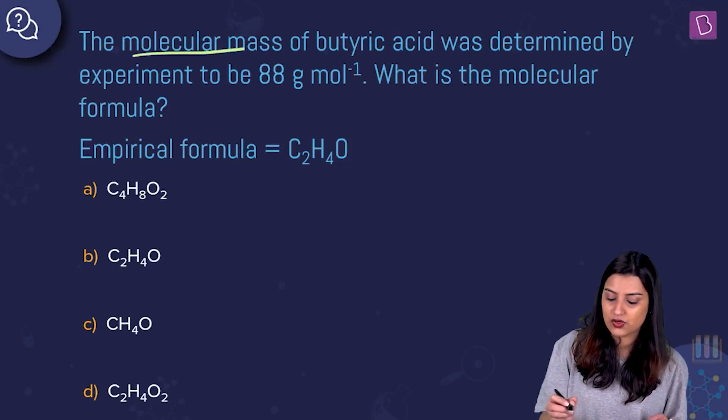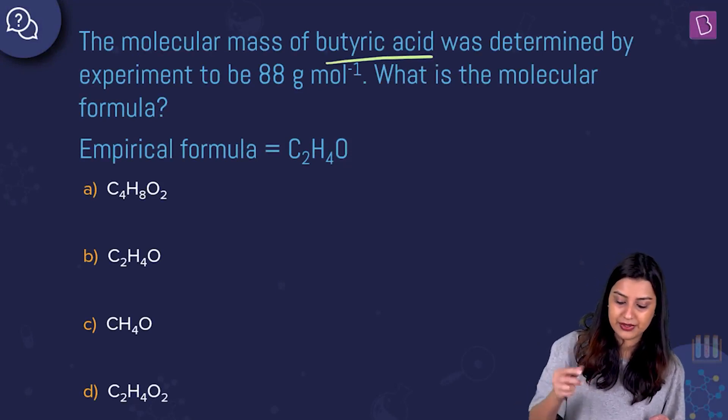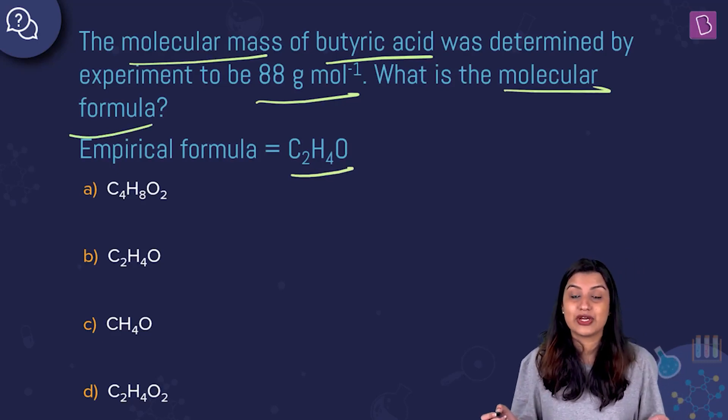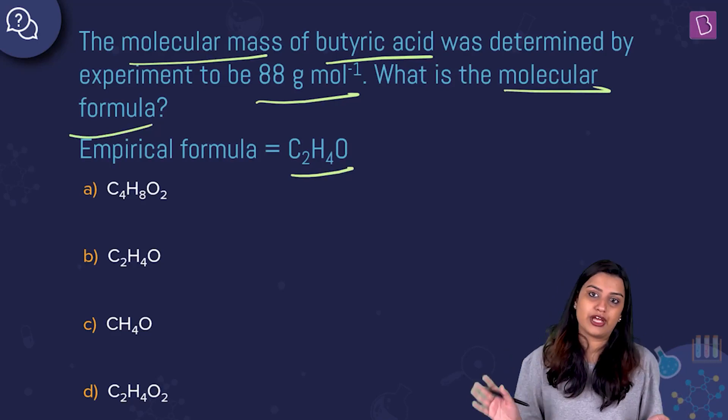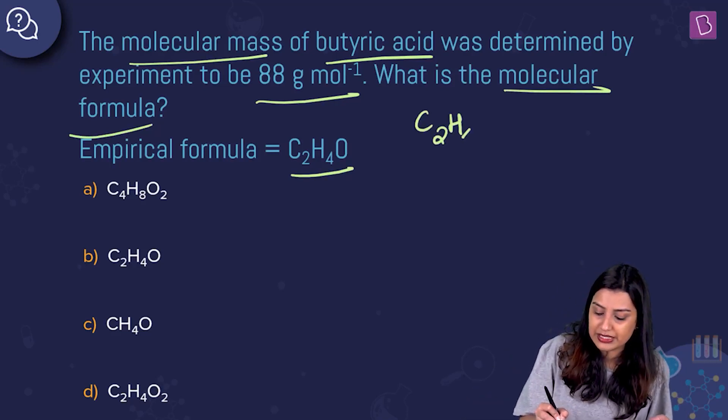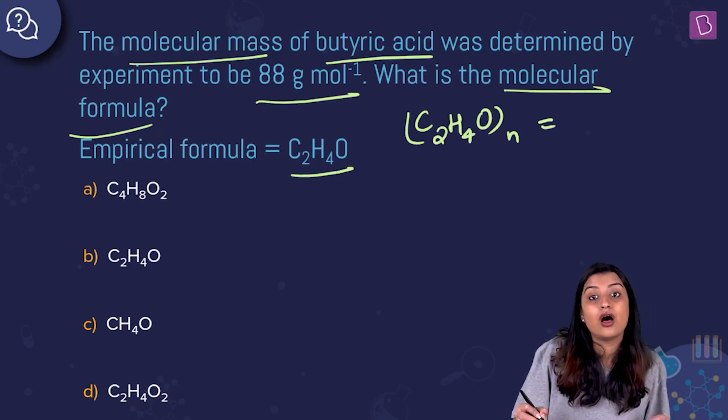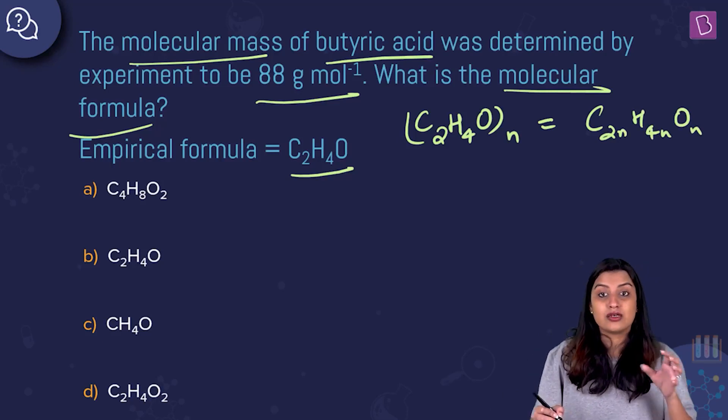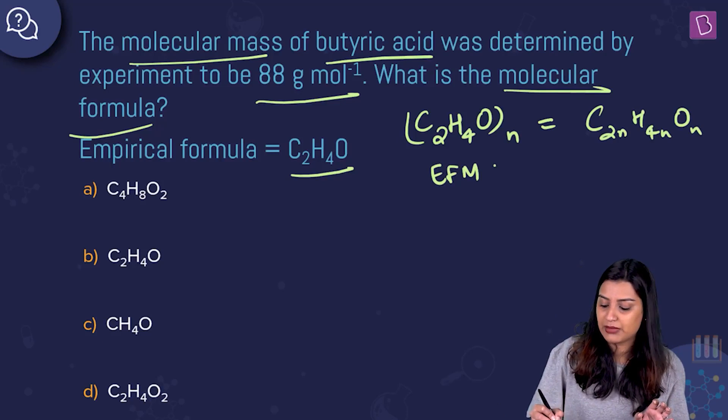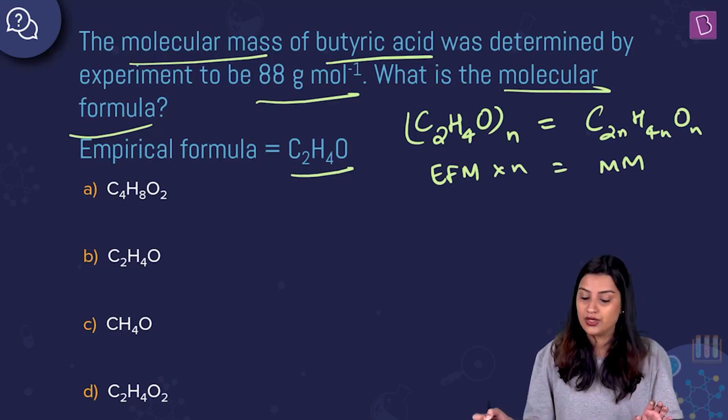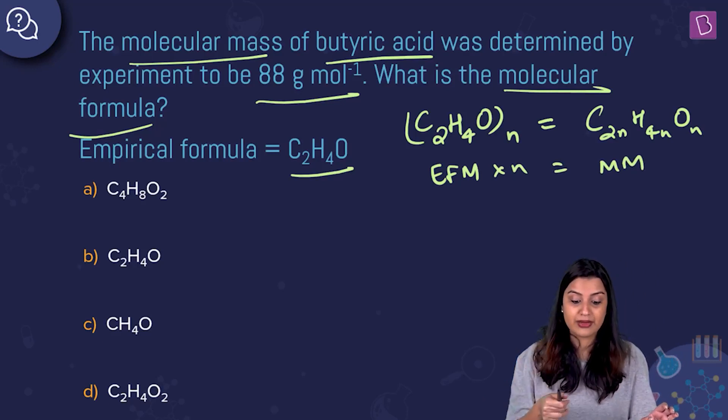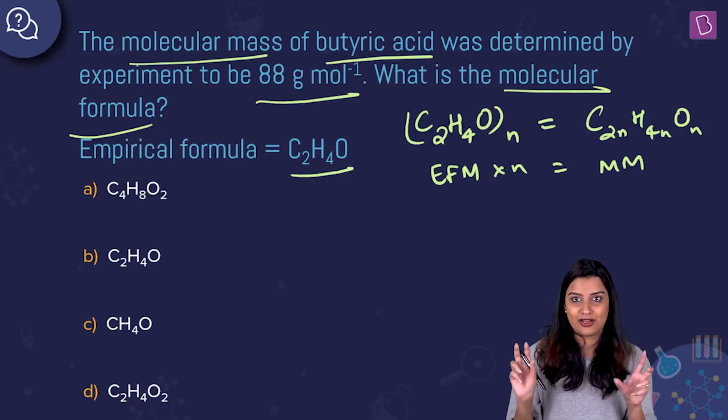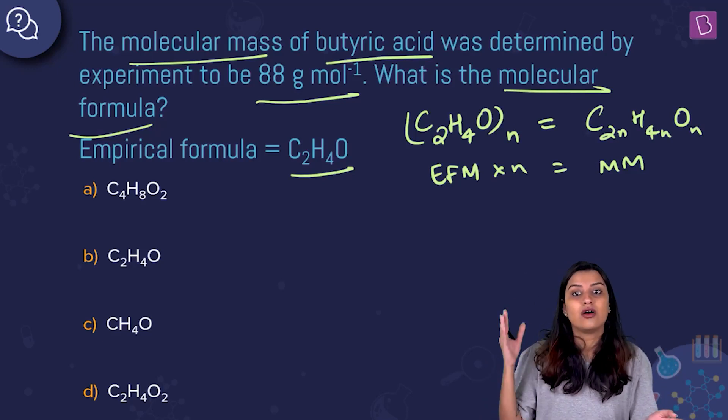The molecular mass of butyric acid was determined by experiment to be 88 grams per mole. What is the molecular formula? The empirical formula is given as C2H4O. The empirical formula taken n times will give you the molecular formula, which means the empirical formula mass multiplied by n will give you the molar mass or molecular mass. Find out n and that n will be multiplied in the molecular formula.